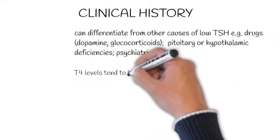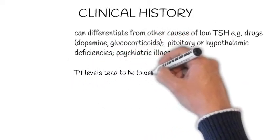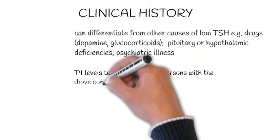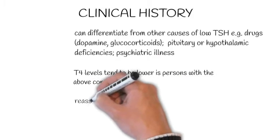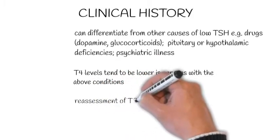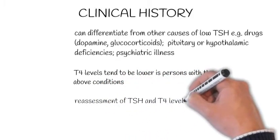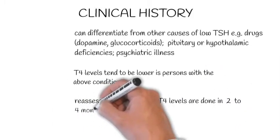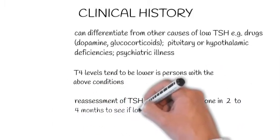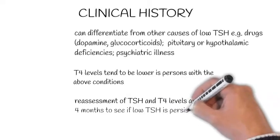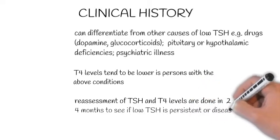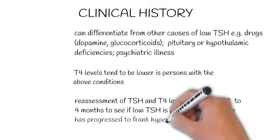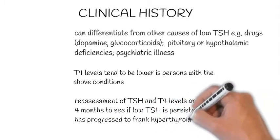In general, free T4 levels tend to be lower in persons with these conditions, whereas persons with subclinical hypothyroidism may have free T4 in the mid-to-high reference range. Reassessment of TSH and free T4 levels is appropriate after 2-4 months to evaluate whether low TSH is persistent and whether subclinical thyroid disease has progressed to overt hypothyroidism.